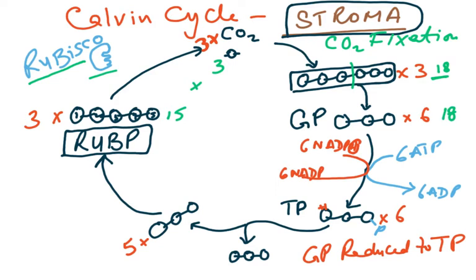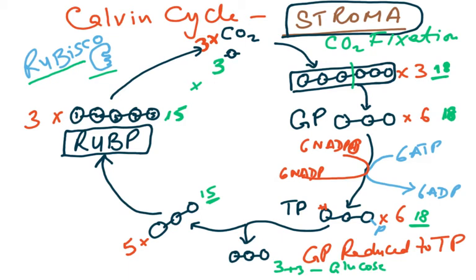We had 18 carbons, and three will exit for glucose formation, leaving us with 15. So: 15-carbon RuBP combines with 3 CO₂ to give 18 carbons as GP, then as TP; three carbons exit, and this three-carbon unit combines with another three carbons to result in glucose. We are left with 15 carbons here.